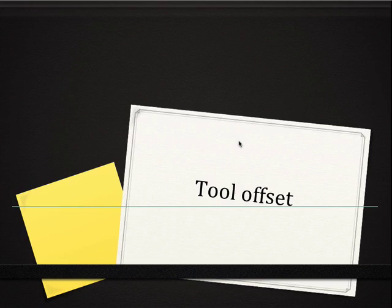Even though we can use G42 or G41 with tool compensation to create our tool path, we still need to be able to calculate the actual location of the tool based upon the tool offset in order to estimate the total travel time and therefore the total machining time, both cutting and non-cutting.